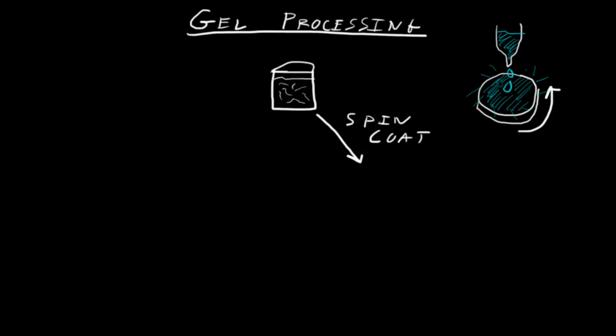It'll coat the surface and any excess will fly off. As it's doing this, it's also evaporating and densifying, and what you get on top of your substrate is a very dense, thin layer of your Sol.